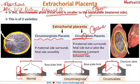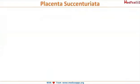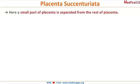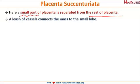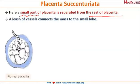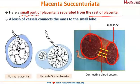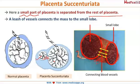Moving on to the next type of placental abnormality: placenta succenturiata. In this, a small part of the placenta is separated from the rest of the placenta, and a leash of vessels connects the main mass to the small accessory lobe, as seen in this diagram.